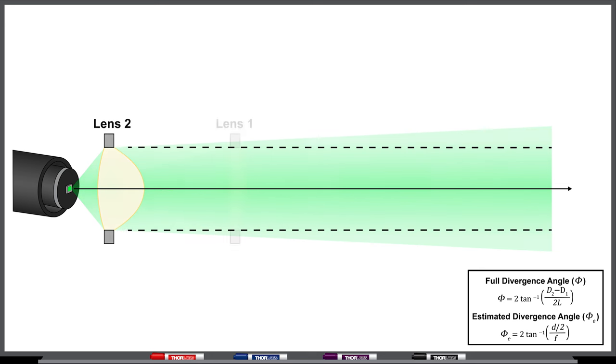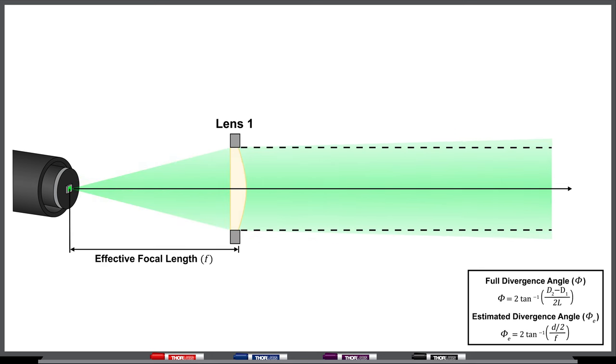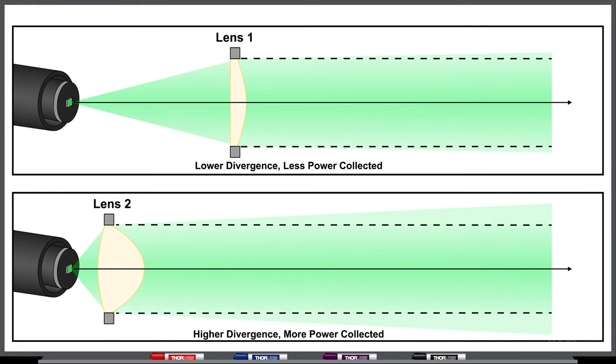As lenses with larger focal lengths are used to collimate the LED light, the divergence of the beam will decrease. As a result, choosing a collimating lens requires balancing the benefits and trade-offs between collecting more power from the LED and limiting the divergence of the collimated beam.